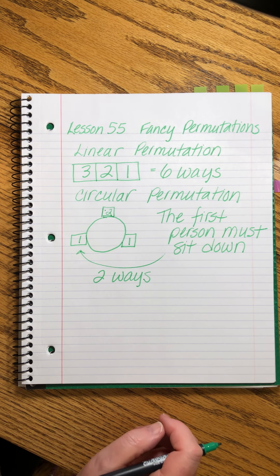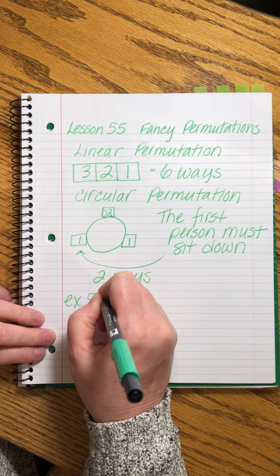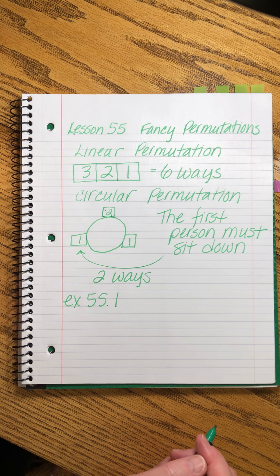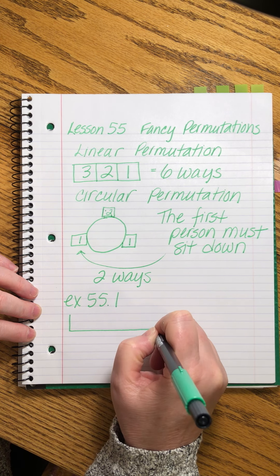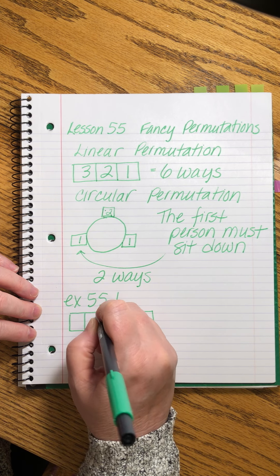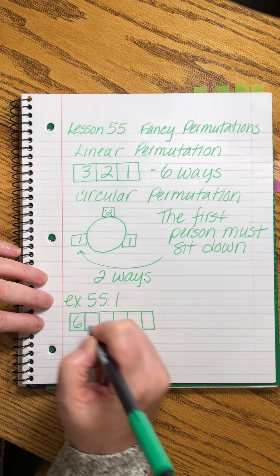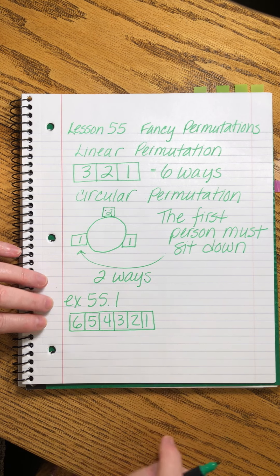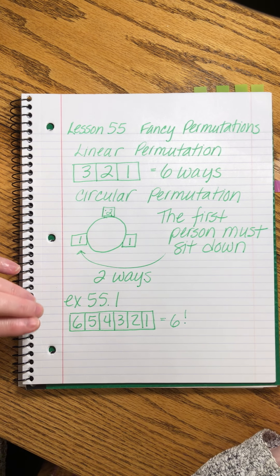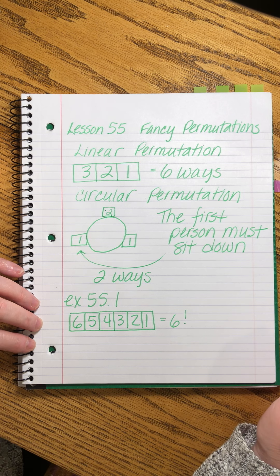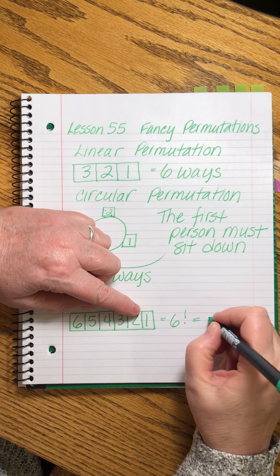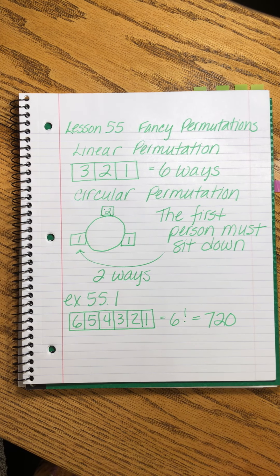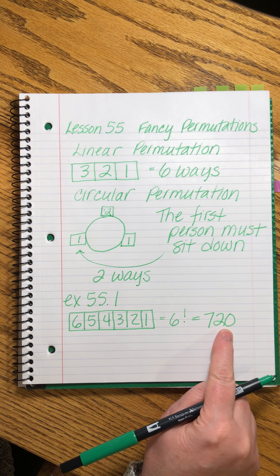Let's do a problem. Example 55.1: How many ways can six different items be arranged in a line, and how many ways can six different items be arranged in a circle? If we do them in a line — six different things arranged in a line, they're physical objects so there's no replacement. We can write that as six factorial. We can calculate it on a calculator or do it by hand: 30 times 12 is 360, times 2 is 720. If you want to practice using the factorial key, double-check your answer with a mental calculation.